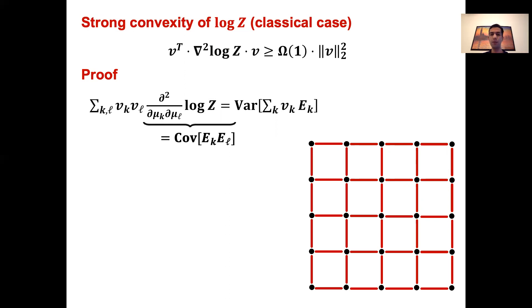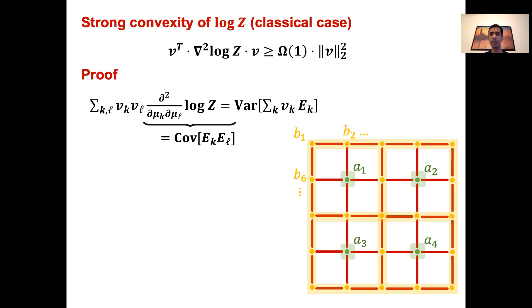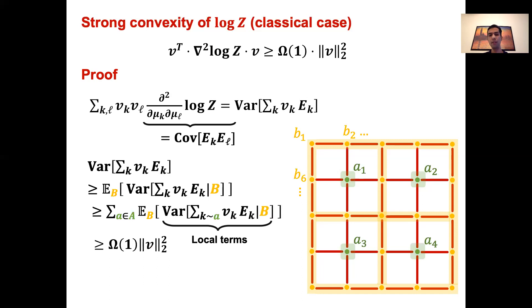Now let's look at the graph corresponding to this Hamiltonian. Now let's divide the vertices into two sets A and B such that the vertices in set A are mutually disconnected, and the size of A is a constant fraction of the total number of vertices. Due to the concavity of the variance, if we condition on the value of vertices in set B, the expected variance lower bounds the original value. And because the remaining vertices are all in the set A, and they are independent of each other, the variance decomposes into a sum of the individual variances. Each of these variances are acting on a local region, and are just a constant times v_k squared. So overall, we get the claimed strong convexity bound.